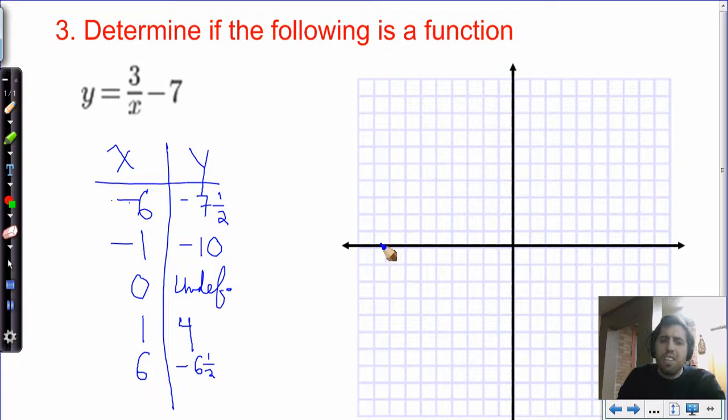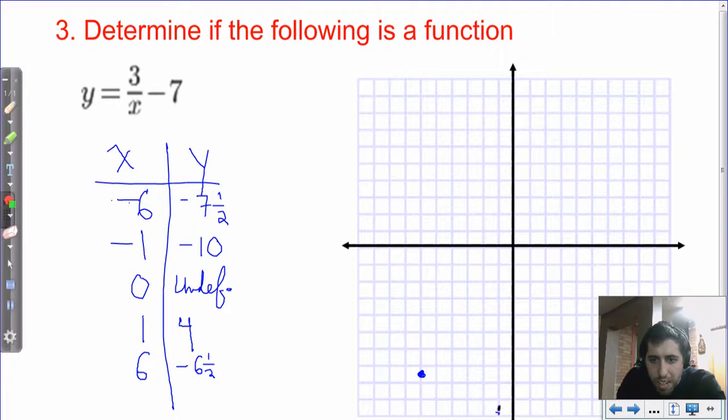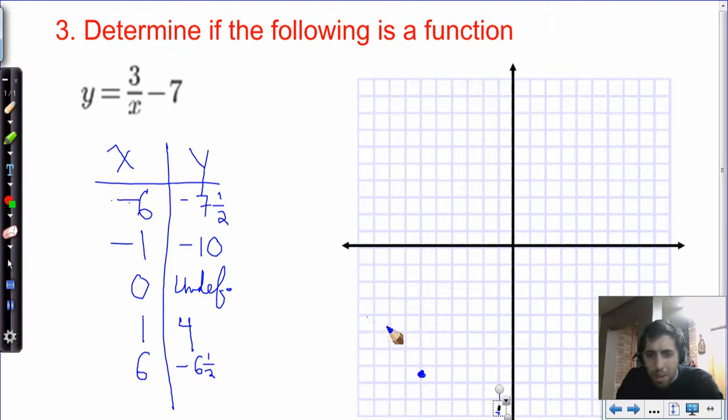So, let's try and graph this real quick. We have negative 6. We'll go 6 to the left, and then down 1, 2, 3, 4, 5, 6, 7 and a half. So, we get one point down here. Okay. That's negative 6, negative 7 and a half. What about negative 1, negative 10 would be all the way down. It would be all the way, way down here. And even a little lower. Zero undefined. We can't graph that.